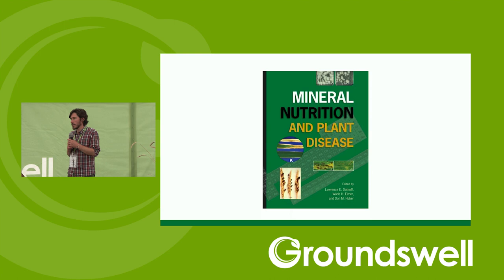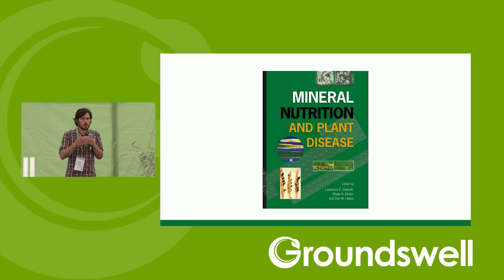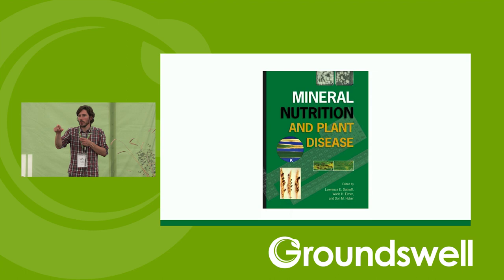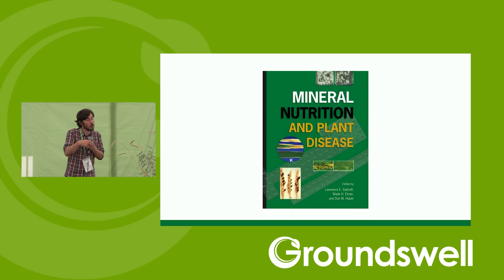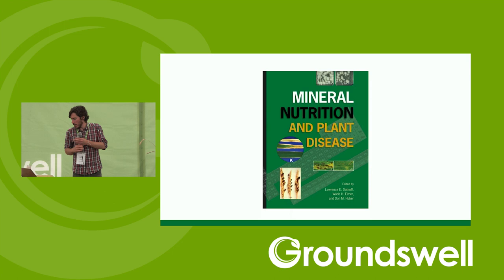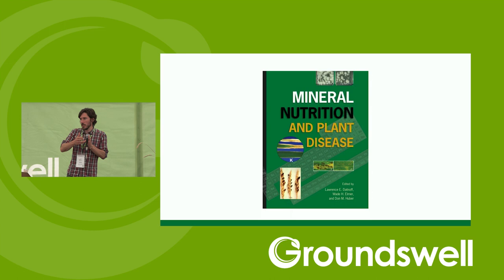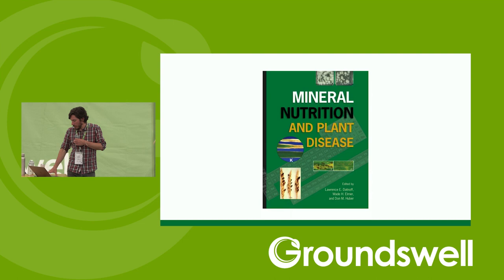One useful resource is the book 'Mineral Nutrition and Plant Disease,' which summarizes hundreds of studies in a tabular form. If you look up the crop of interest and then look at different nutrients, it gives a nice table of various diseases linked to either a deficiency or excess supply of that nutrient. It's quite comprehensive, though expensive and can be dense reading.